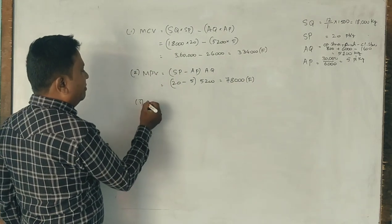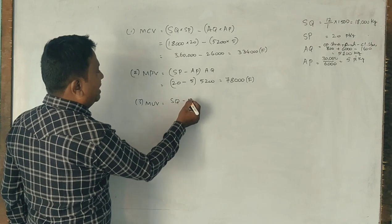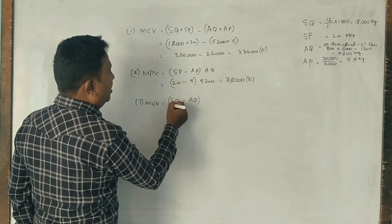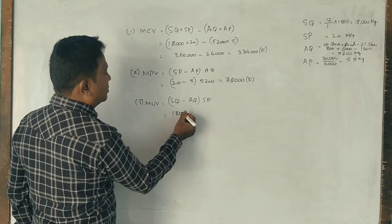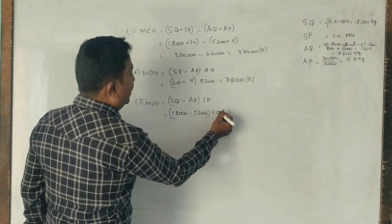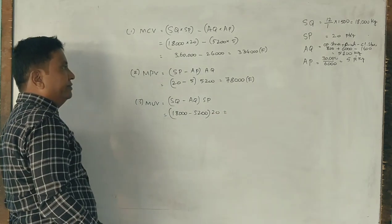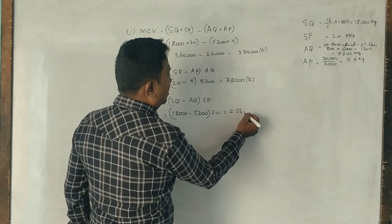Last one is material usage variance: standard quantity minus actual quantity into standard price. Standard quantity 18,000, 5,220 rupees. 26,000 favorable.